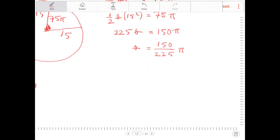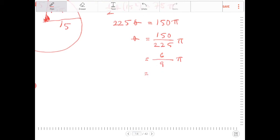And I notice that 25 is divisible into both 150 and 225. So 25 divides evenly into 150 six times and 225 divides evenly into 9 times. And this reduces further to 2π over 3.